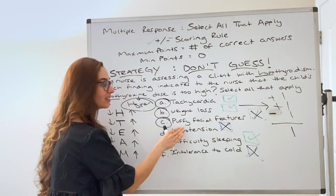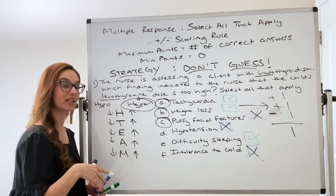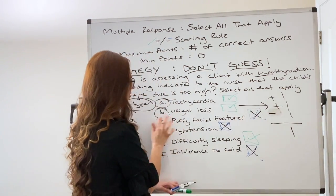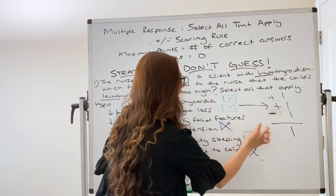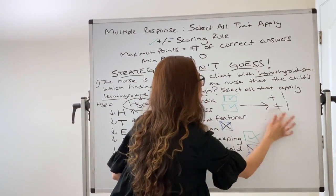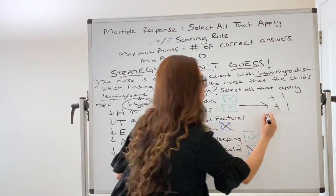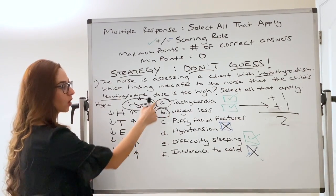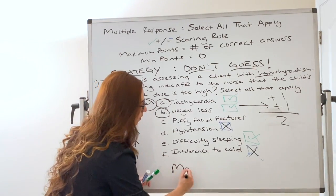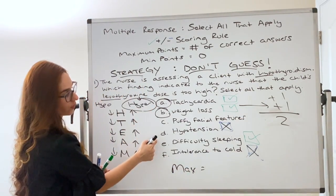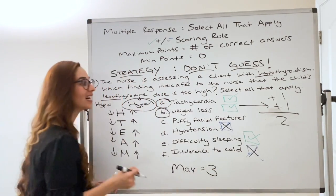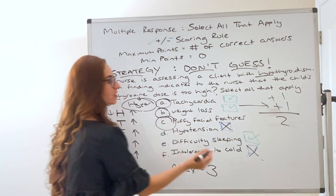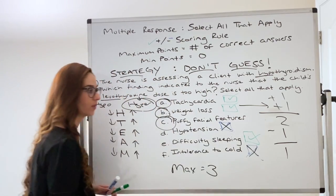Do you see why your strategy is to not guess with this scoring model for your select all that applies? Because every time you guess and you don't get it right you lose a point. If you just go with what you absolutely know, if I had not chosen this answer choice, look I at least would have gotten two points as opposed to the one. Remember the maximum points I could have gotten is the total correct answer choices. So your max points for this question equals one, two, three. These are the correct answers. But because I guessed instead of just going with what I knew for two points, when I picked this one it took away another point. So I would have only ended up with one point out of the three.